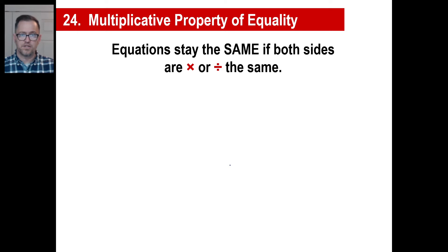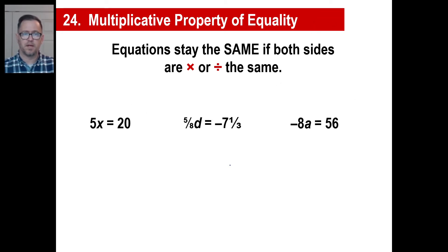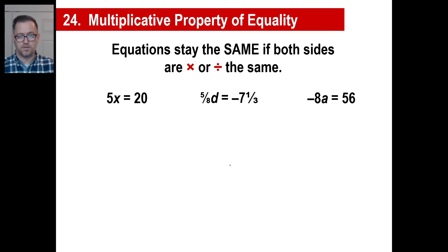I just want to remember: equations stay exactly the same if you multiply or divide both sides by the same number. That's just a rule. You'll see why this is true in just a second. In other words, if you have 5x equals 20 and you multiply or divide by exactly the same number on both sides, it'll be exactly the same.